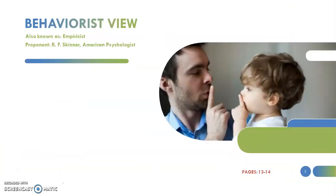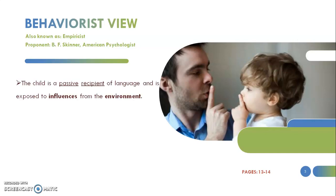Let's begin with the behaviorist view, also known as the empiricist. The proponent is B.F. Skinner, an American psychologist. What Skinner and other behaviorists believe is that language is something observable — they focus on what they can see, which is why it is called empiricist, based on studies and empirical research. The child is a passive recipient of language.